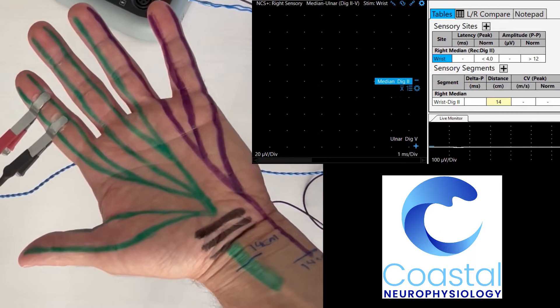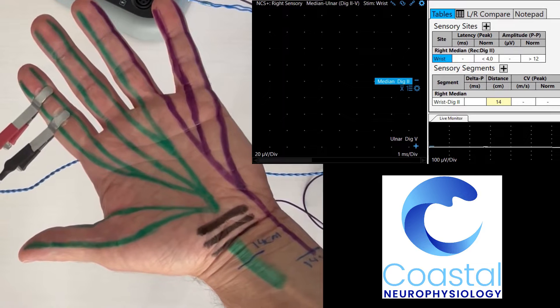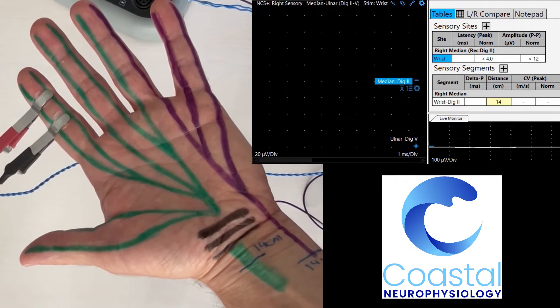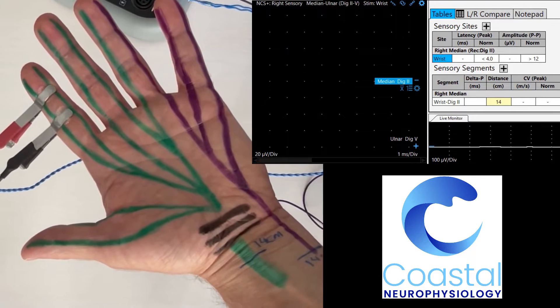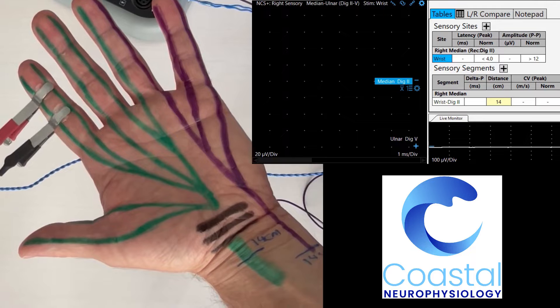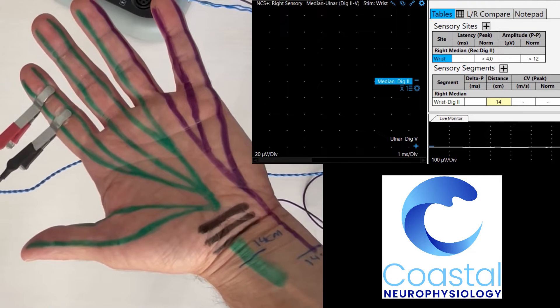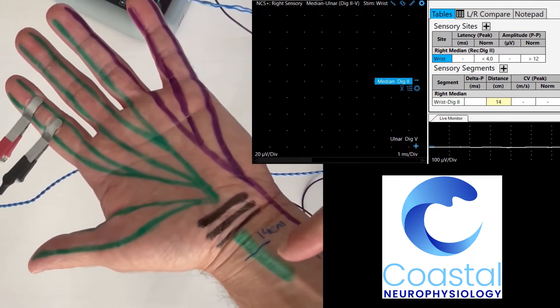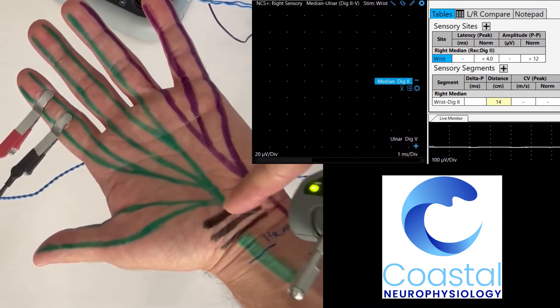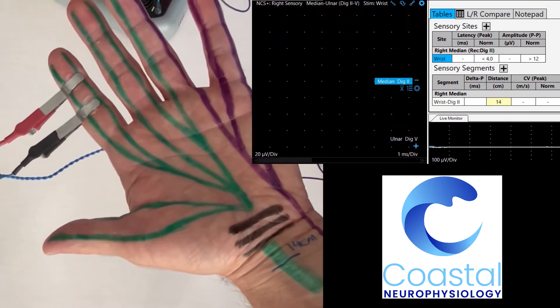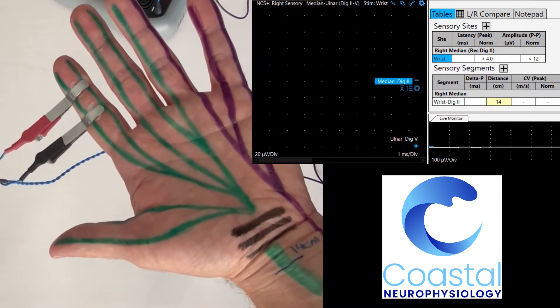There are multiple ways to test the median nerve. In this particular instance, this is a very common setup that I have ready. This is a sensory signal that I'm going to record, stimulating the median nerve here at the wrist, sending a signal through the sensory nerve fibers to a recording electrode that I have up here on my index finger.